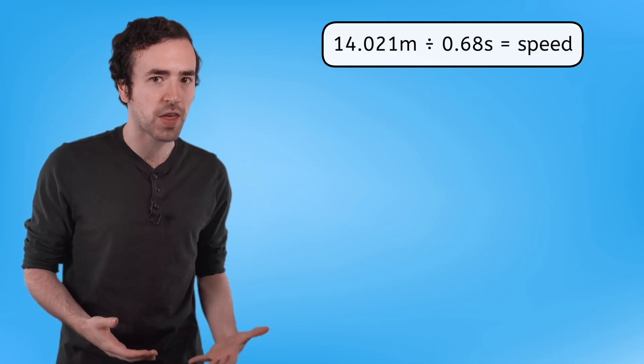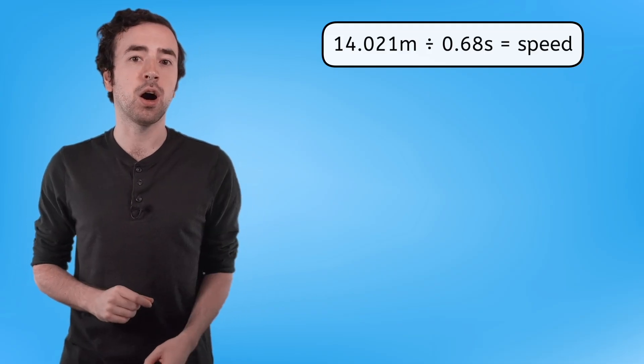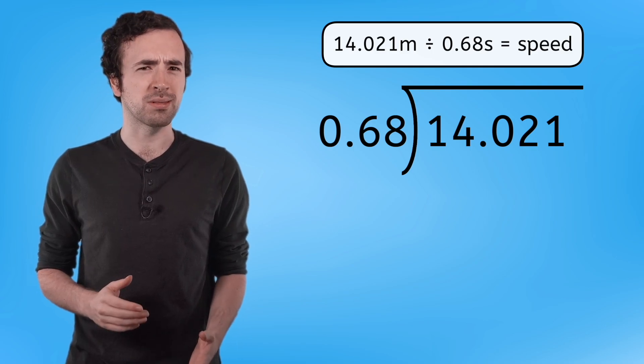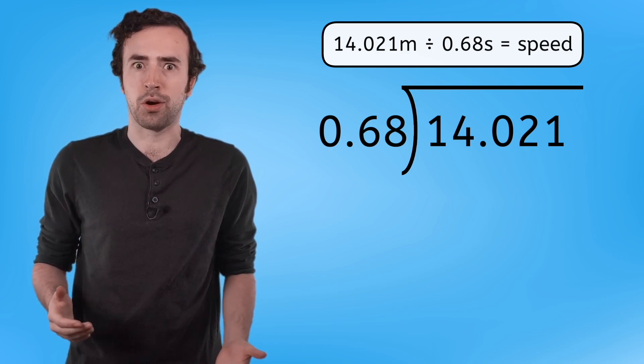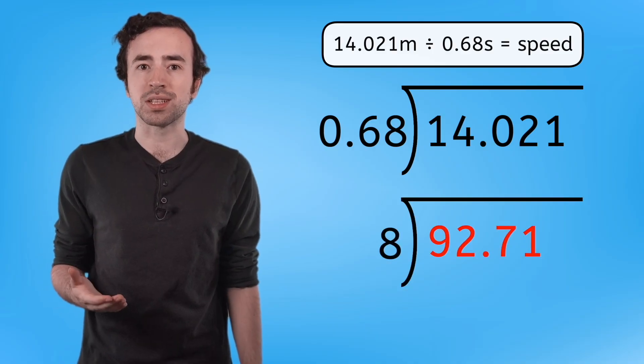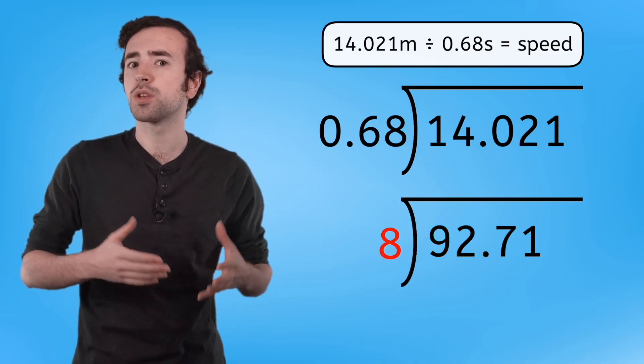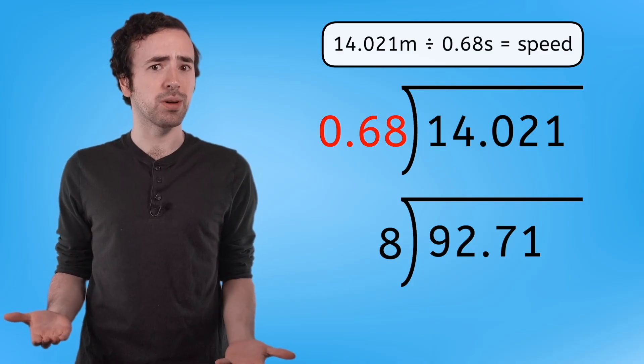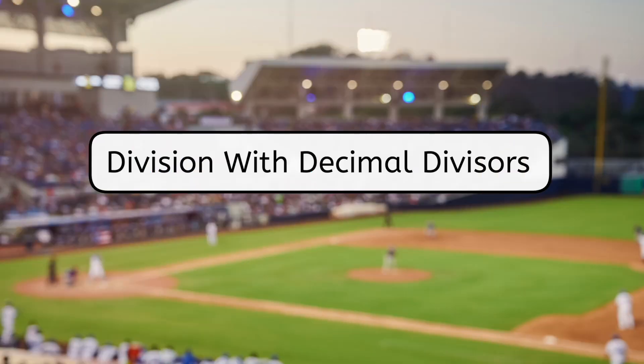Great job on the warm-up problem. To divide decimals, we need to be sure to keep track of that decimal point and make sure our numbers stay organized while completing our long division. These skills can help us calculate the speed at which the ball is traveling in Mia's game. So we need to divide 14 and 21 thousandths by 68 hundredths. Wait a second — a divisor with a decimal? What a curveball! In the warm-up problem, the dividend was a decimal and the divisor was a whole number. But what should we do if the divisor is a decimal too?